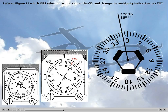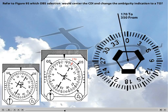I'm also going to include the radial from the station, which is 350. Now, 170 would be the answer to our question if the needle had been centered. But it's not that easy — the needle is not centered.